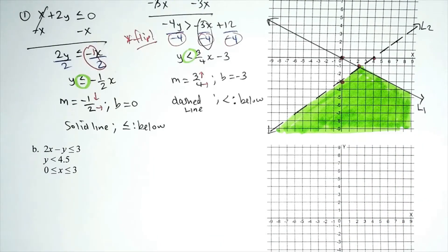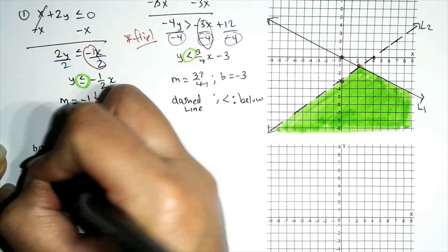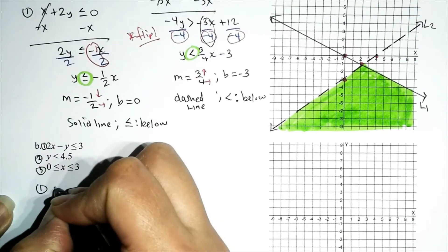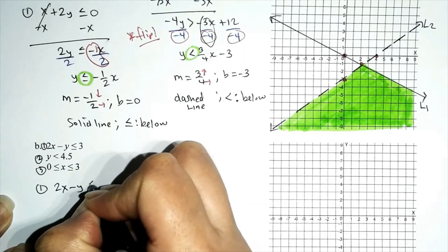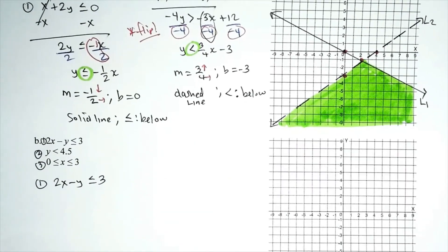Problem B is a little bit spicier — the grand finale of this video. We have three inequalities in the system, and the directions say graph the solution region. In other words, graph the intersection: graph all three inequalities and see where they overlap, if they overlap at all. The first inequality is 2x minus y is less than or equal to 3.